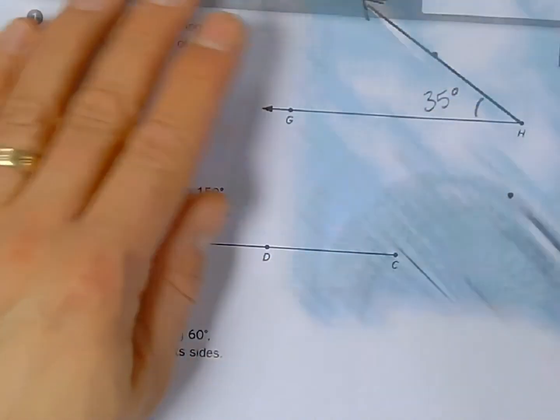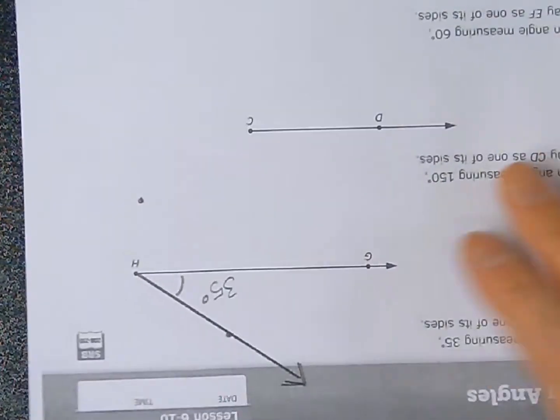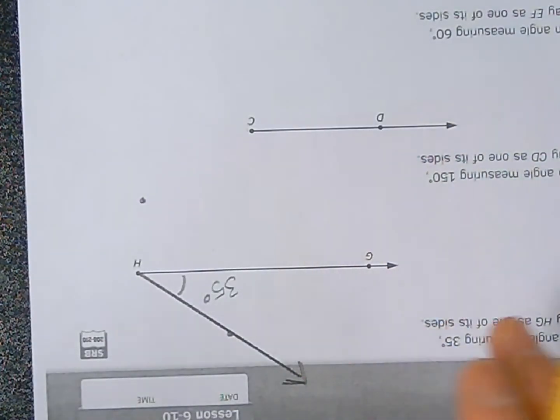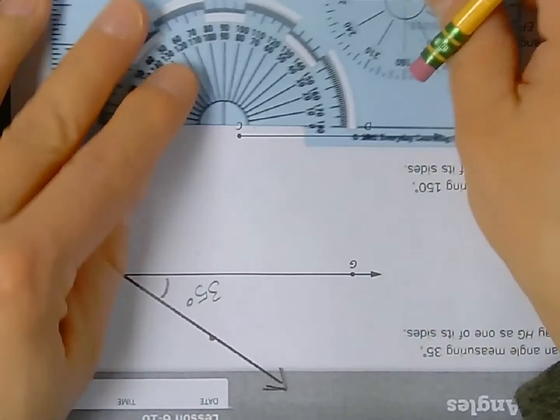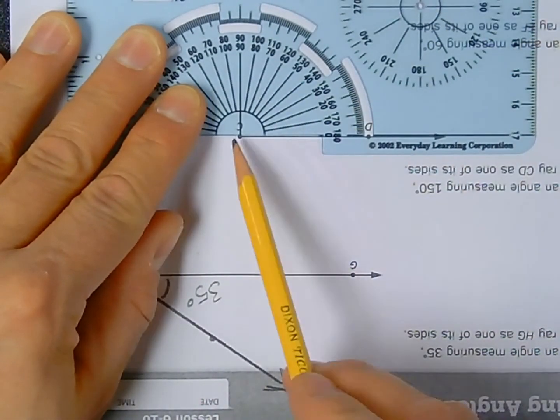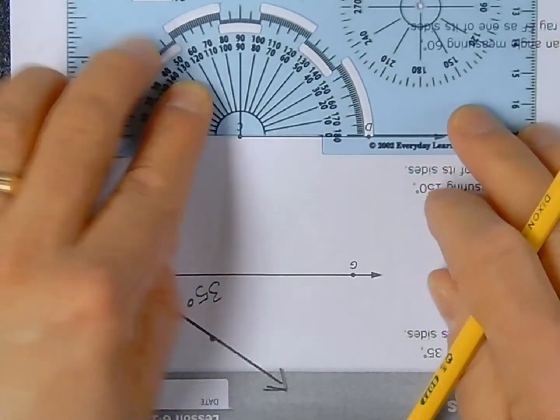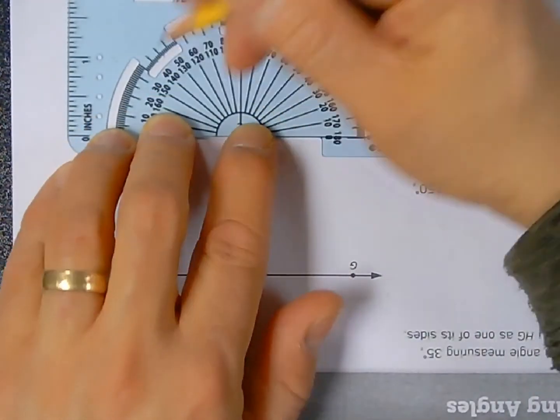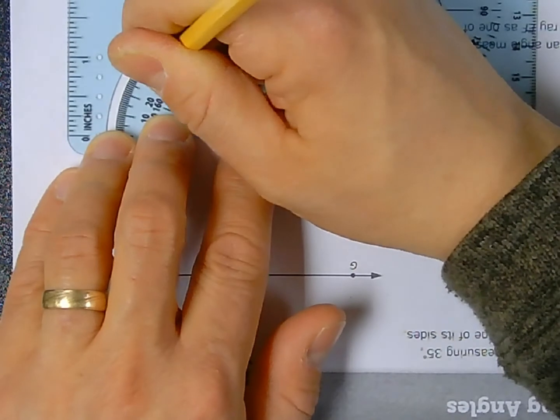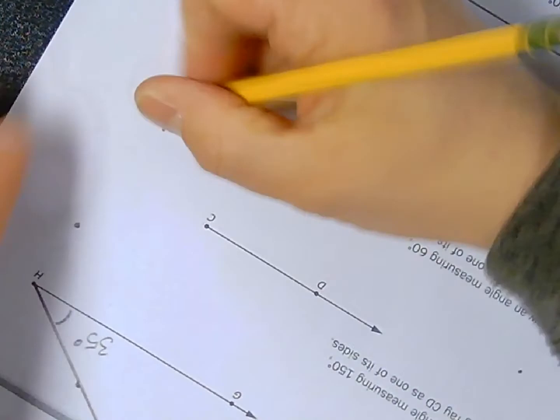I could start with a ray CD that is pointing to the right. See, I turn my paper upside down and I could lay my protractor down on the page. Line up my endpoint with my center of my protractor, line up my zero degree mark with the ray, and then if I put 150 right over here I would have a ray that is on the opposite.